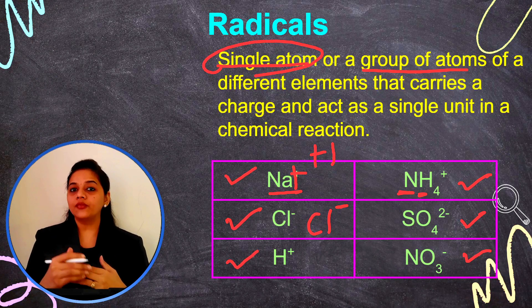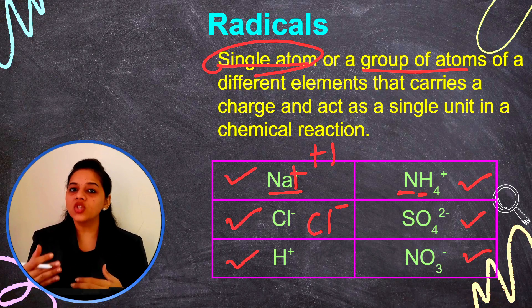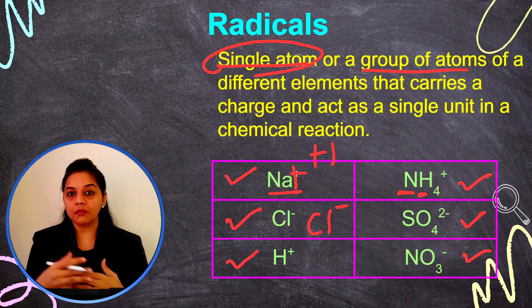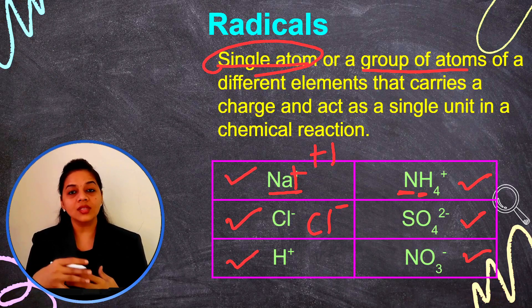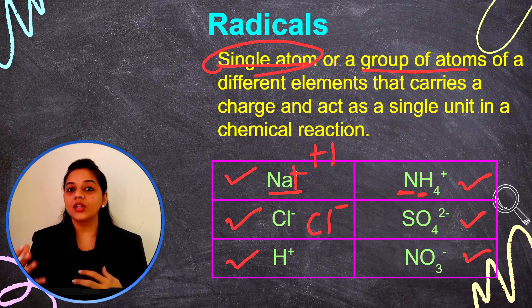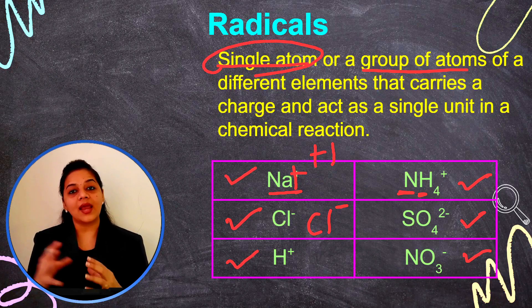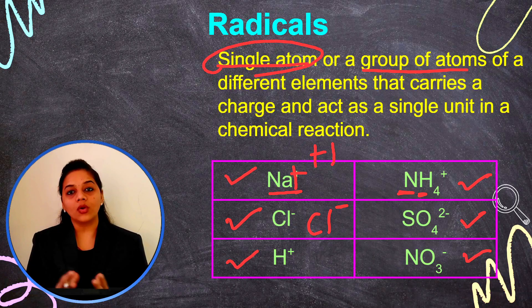Similarly, if a plus-two charge is present, that means it has two extra electrons and it can donate two extra electrons, following the octet rule.